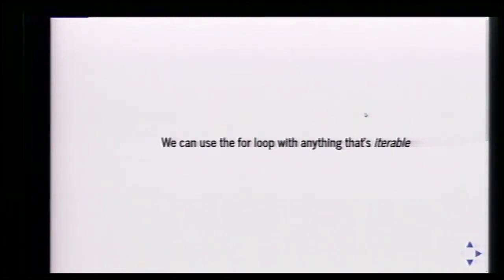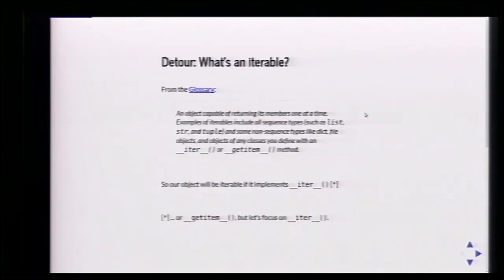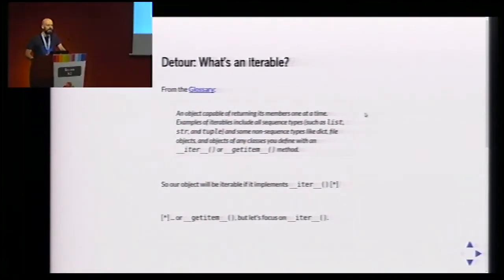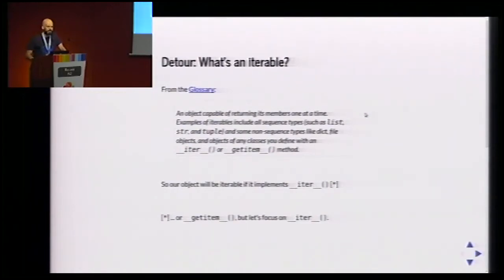What's an iterable? We go to the docs, and it turns out all the answers are not only on Stack Overflow. An iterable is an object capable of returning one element at a time. It means our class has to implement a magic method — __iter__ — or also __getitem__, but let's focus on the first.